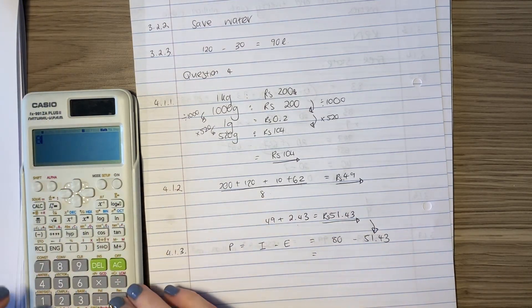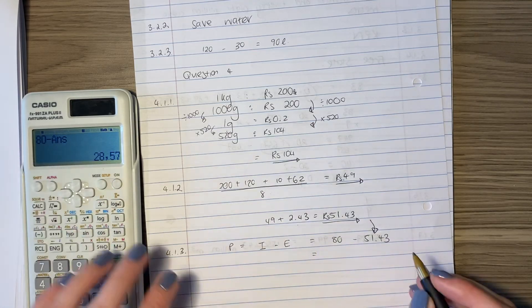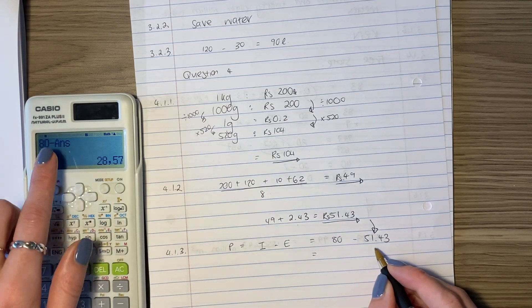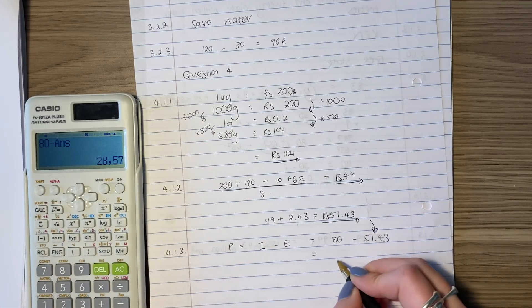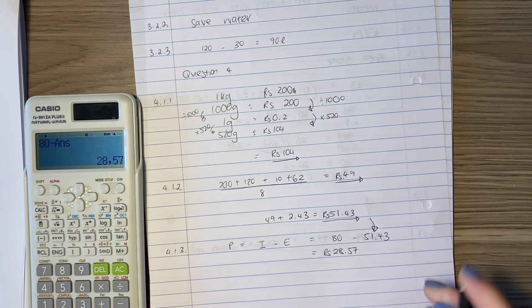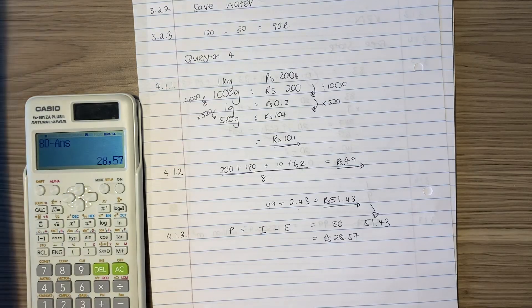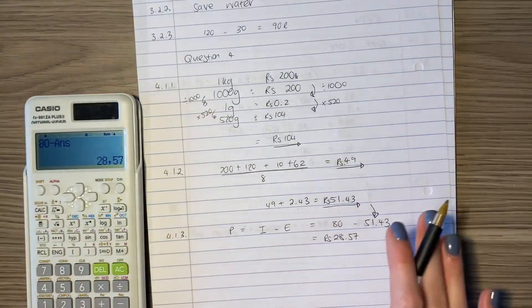So we're going to say 80 minus, why did I put an answer? Because that was what my previous, 51.43 was my answer for my previous calculation. I'm just also showing you some efficient techniques for when you are working quickly. That's how much his profit was. But it talks about percentage here, right? Percentage profit. So we have to convert this into percentage profit.